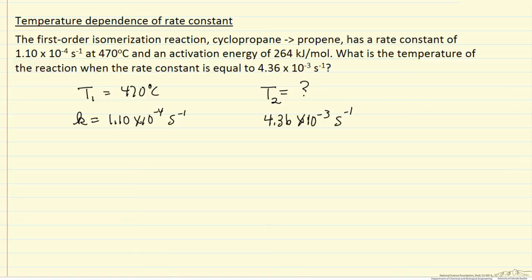We know that rate constant k equals some pre-exponential factor times e to the negative activation energy over the gas constant R and the absolute temperature T. Since we have the rate constants and we need the temperature, it's easiest to work with this if we take the log. So the natural log of k equals the natural log of k0 minus activation energy over RT.